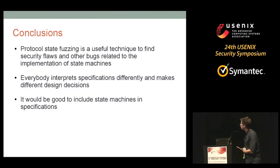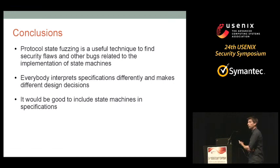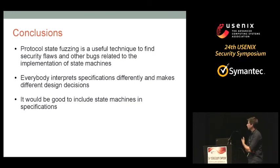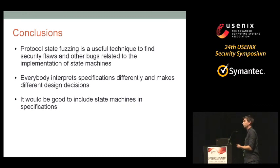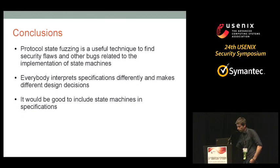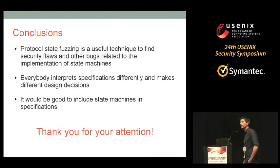To conclude: protocol state fuzzing is a useful technique. We found at least one very serious security flaw and several smaller implementation bugs related to state machine correctness. Everybody interprets specifications differently — nobody managed to implement TLS in the same way. It would therefore be a good idea to include a formal state machine specification in any protocol standard, so developers no longer have to extract it from prose specifications. Thank you for your attention.